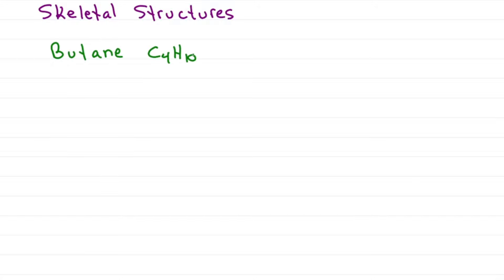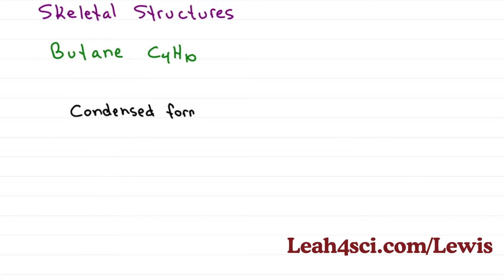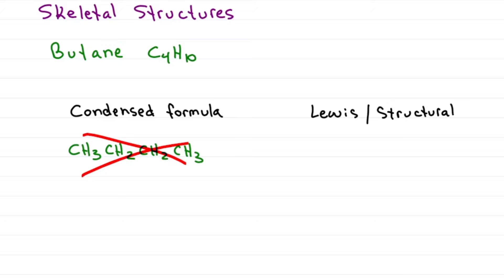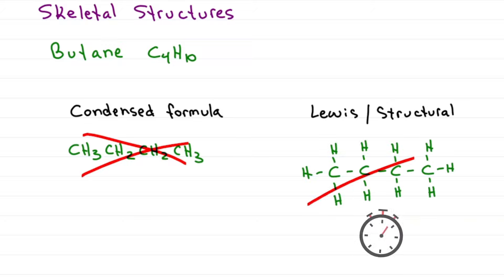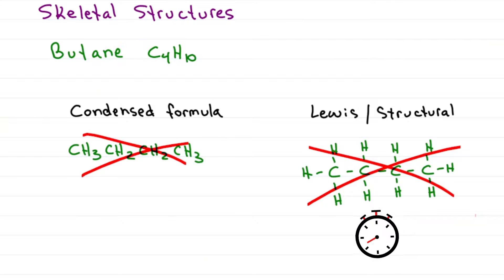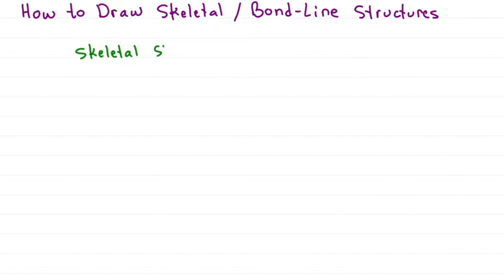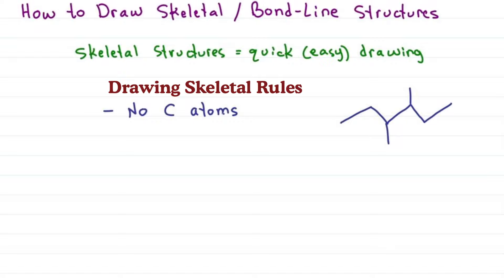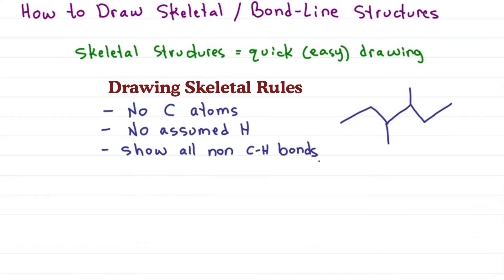Starting with butane, C4H10, we've already learned the condensed formula showing all the groups without bonds, but this doesn't show us what we're looking at. A Lewis structure or structural formula shows all the atoms and electrons, but this takes way too long, especially if you have to draw it over and over in a mechanism. Skeletal structures give us a quick and easy way to represent organic molecules. Carbons are implied but never drawn; because carbons have so many hydrogens, we assume H but never draw them — with one exception I'll show you later. Show all the bonds except between carbon and hydrogen, show all heteroatoms (everything that's not carbon or hydrogen), and show all hydrogens on the heteroatoms.